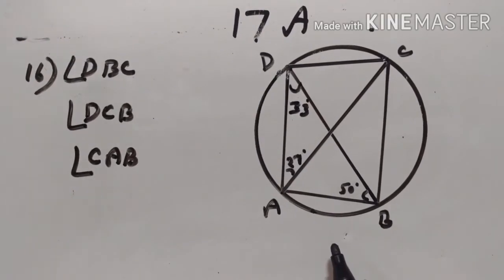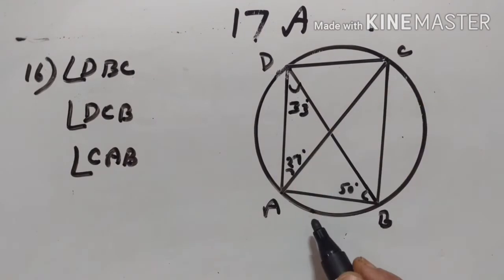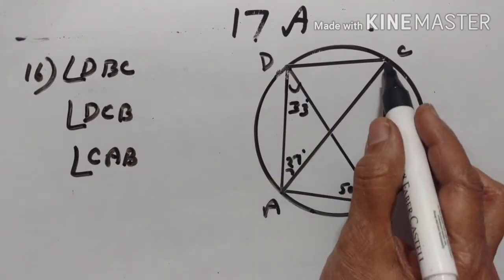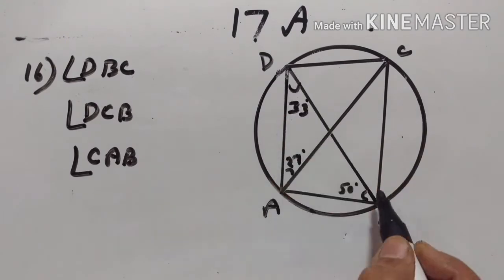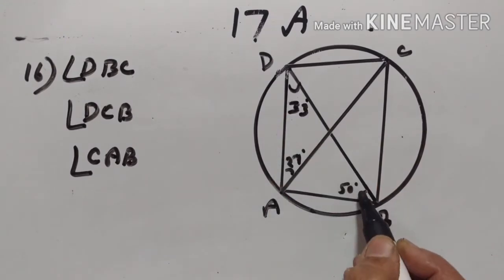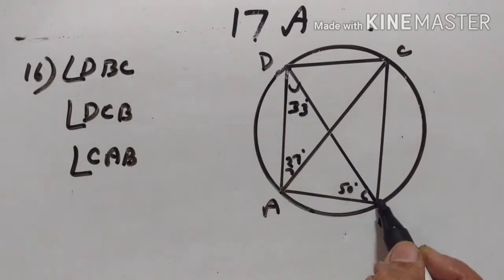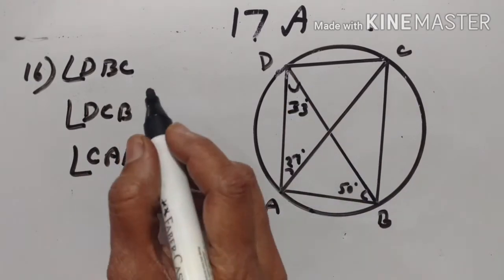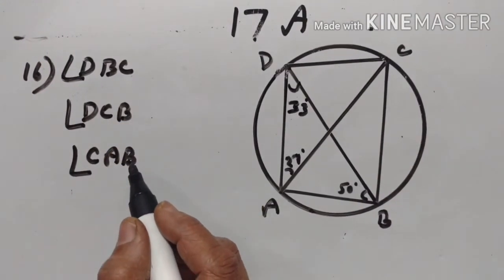Exercise 17a, 16th problem. In a cyclic quadrilateral ABCD, angle DAC is equal to 27 degrees, angle DBA is equal to 50 degrees, and angle ADB is equal to 33 degrees. We have to calculate angle DBC, angle DCB, and angle CAB.